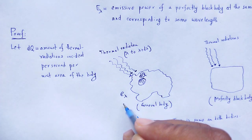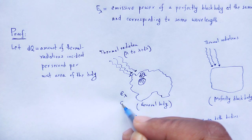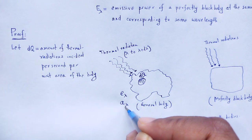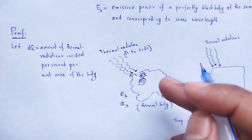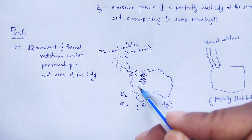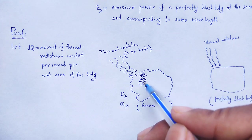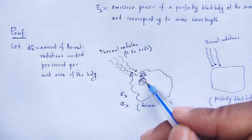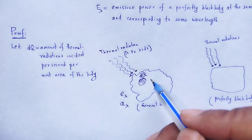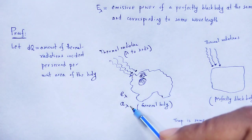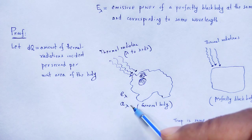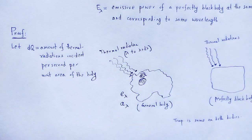A_lambda is the absorptive power. Similarly, the amount of thermal radiations absorbed within that unit area per unit time, corresponding to wavelength lambda, is taken as A_lambda for that general thermal body.